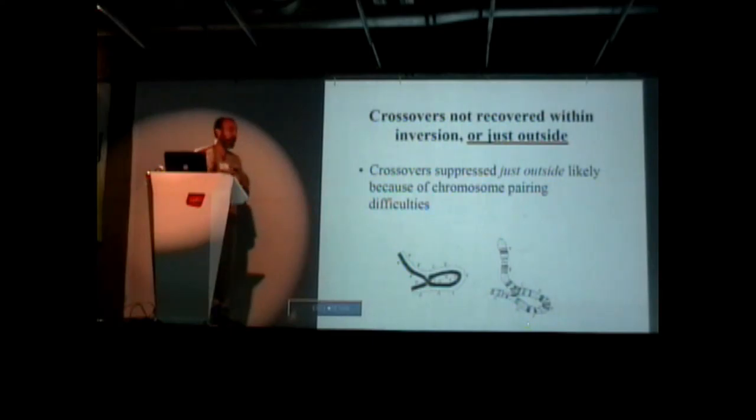We can actually examine that because crossovers are not recovered within the inversion, as I said before. But also, they're not recovered just outside the inverted regions. This shows a picture of the chromosome from synapsis. Notice there's not perfect pairing even just outside the inverted regions, and therefore crossovers are suppressed just outside, likely because of this pairing.